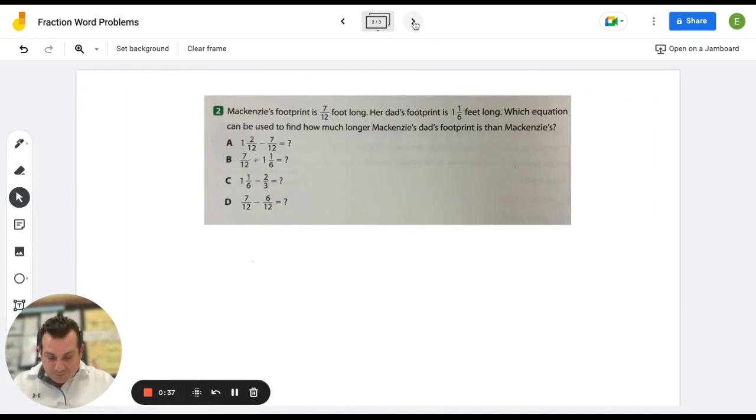Okay, so let's take a look right here. This problem here says, McKenzie's footprint is 7 twelfths of a foot long. Her dad's footprint is 1 and 1 sixth feet long. Which equation can be used to find out how much longer McKenzie's dad's footprint is than McKenzie's?